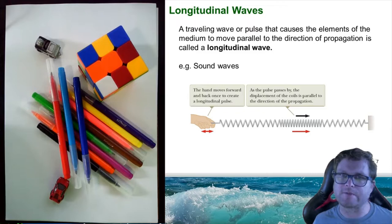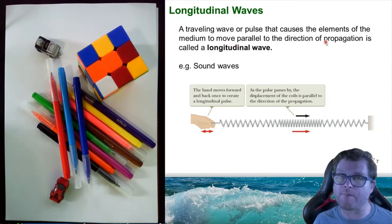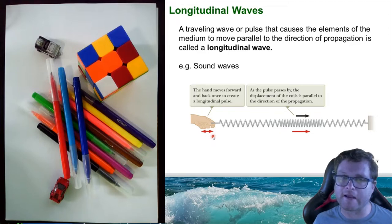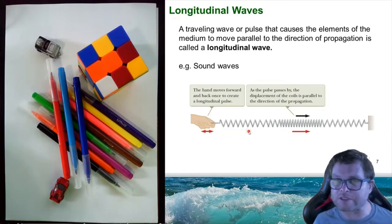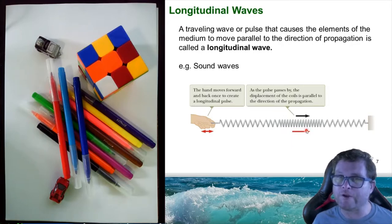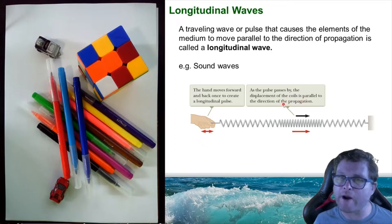For longitudinal waves, on the other hand, a wave or pulse causes the elements of the medium to move parallel to the direction of propagation — that's the definition of a longitudinal wave. An example is sound waves moving through air. In the example shown, a person moves a spring back and forth — their hand moves forwards and backwards — creating a longitudinal pulse that travels along the length of the spring from left to right. But as the pulse propagates, each element of the spring simply moves to and fro, so the displacement of the coils is parallel to the direction of propagation.